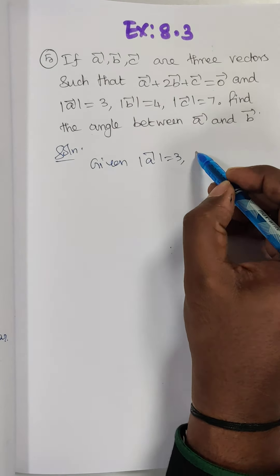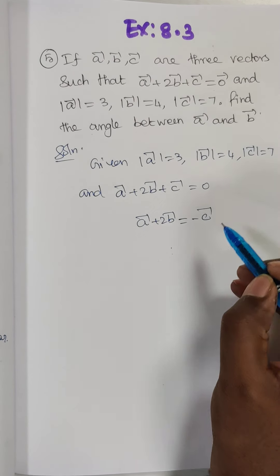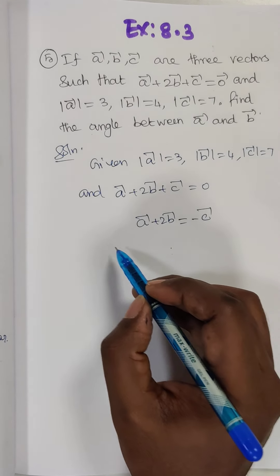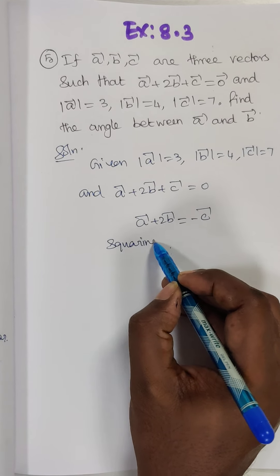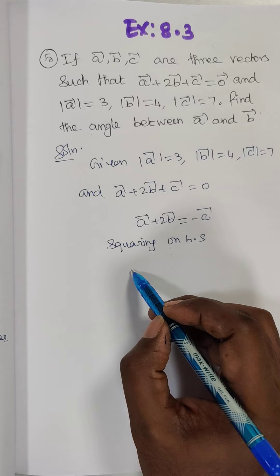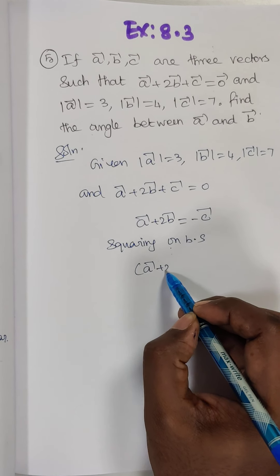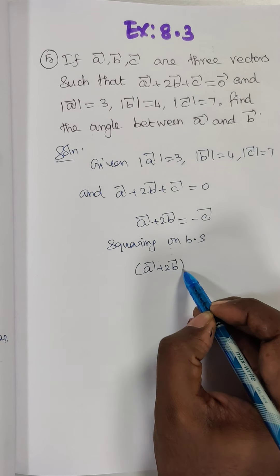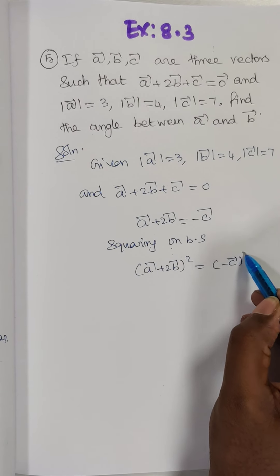So now A vector plus 2B vector is equal to minus C vector — I am going to take it to the right-hand side. So taking squaring on both sides: A vector plus 2B vector, the whole square, is equal to minus C vector, the whole square.